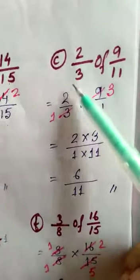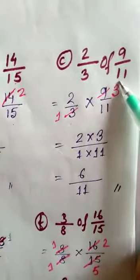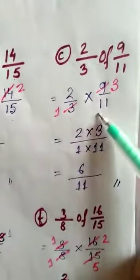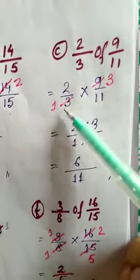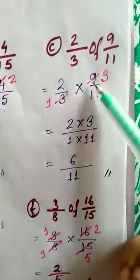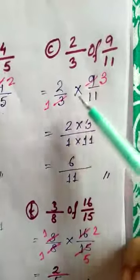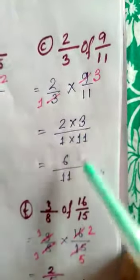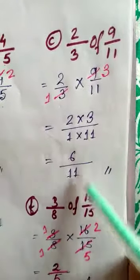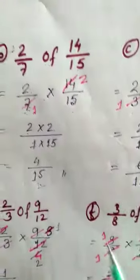Question 1c: 2/3 of 9/11. So 2/3 × 9/11. Cancel 3 and 9 — 3 goes into 3 once and 3 goes into 9 three times. We get 2×3 over 1×11, which is 6/11. The answer is 6/11.